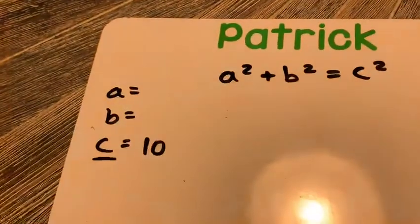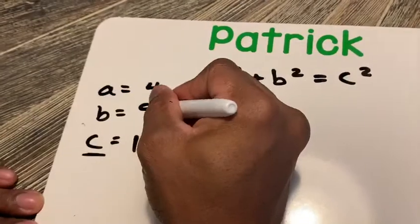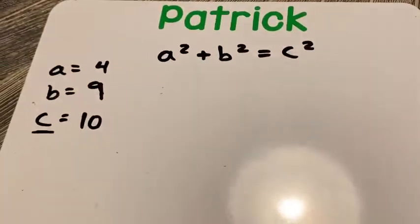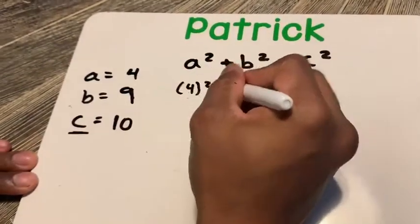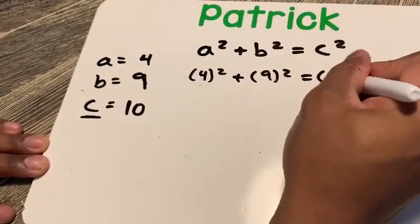And then the others don't matter. We have a four, we have a nine. And then we just substitute those values in. So we get four squared plus nine squared equals 10 squared.